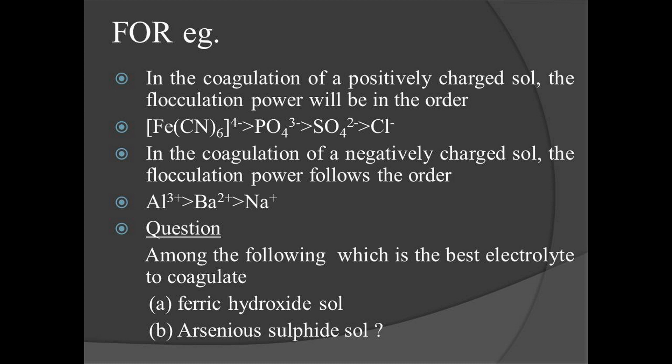Taking the example of ferric hydroxide salt: since ferric hydroxide is positively charged with formula Fe(OH)₃/Fe³⁺, the counter ion must be negatively charged. Greater the charge on the negatively charged particle, more will be the coagulation power. So the highest coagulation power is shown by ferrocyanide, followed by phosphate ion, followed by sulfate ion, and finally chloride ion.